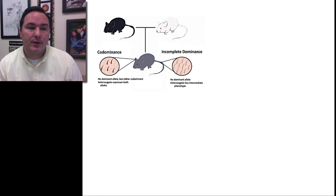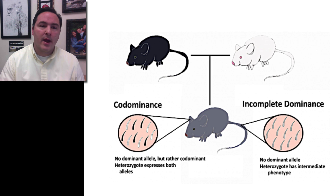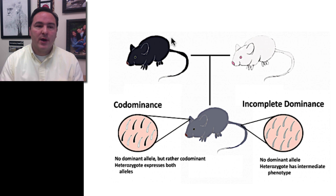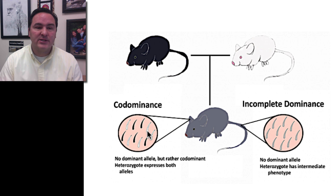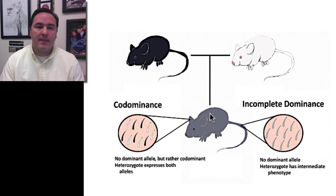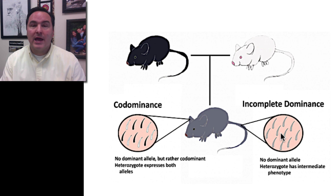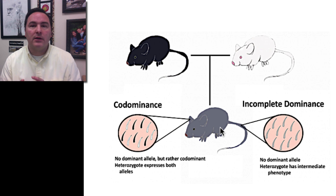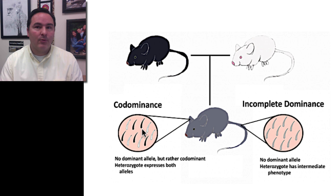Let's talk for a moment about codominance and incomplete dominance. Codominance is where both phenotypes are dominant and both are being expressed — it's not that one covers up the other. For example, if a black mouse and a white mouse came together under codominance, you would have hairs that are both black and white being expressed, and from far away that mouse would look gray. Incomplete dominance is where the black and white mouse come together and produce mice that are actually gray — producing hairs that are gray. So in incomplete dominance there is no dominant allele; the heterozygote has an in-between phenotype. With codominance you're still producing black and white hairs, just both of them, and they mix to look gray. With incomplete dominance, you are producing gray hairs.